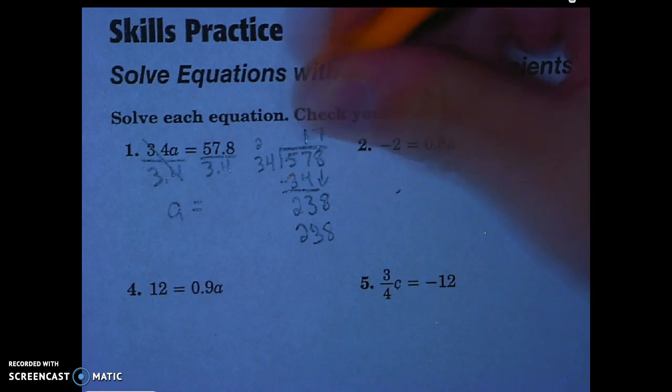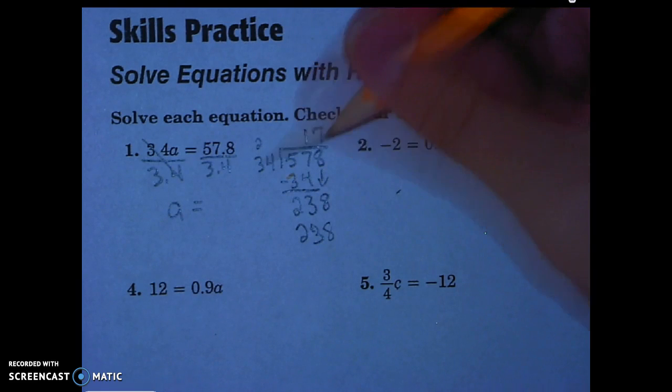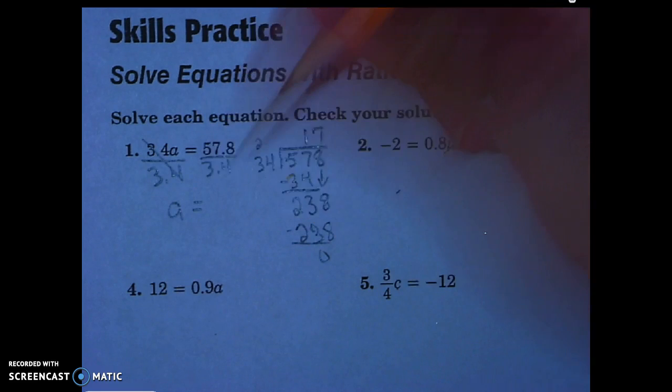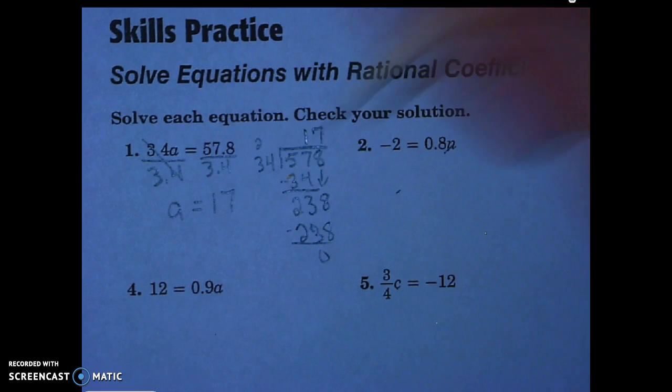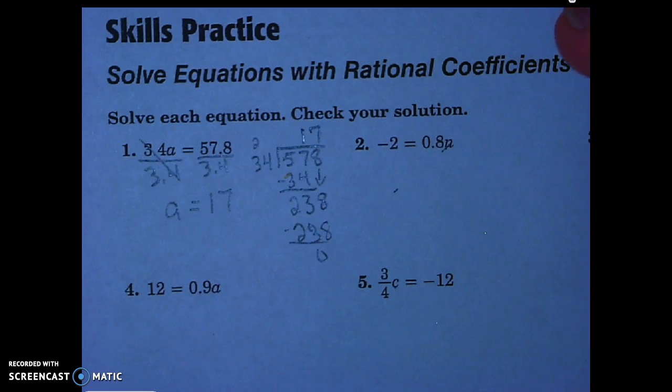That's nice. That's 238. And that is 17. It goes into it evenly, nothing left over there. So A does equal 17 exactly. And so that's what number 1 looks like with the decimal.